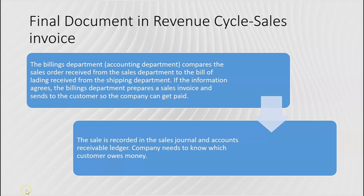The sales invoice is sent to the customer so the company can get paid. As the accountant in the billings department, you pick up the sales order showing 100 cases of Snapple were ordered and approved by credit, then pick up a copy of the bill of lading showing 100 cases of Snapple were shipped to the customer.